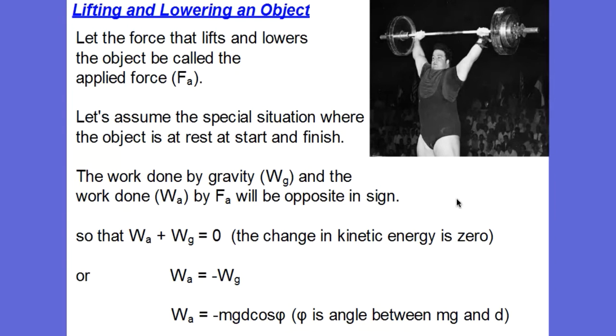So the work done by gravity, which we'll call W_G, and the work done by the applied force, W_A, will be opposite in sign. Because on the way up, the force of my hand is upward and the displacement is upward. So that's positive work done by my lifting force. But during that same time, weight is downward and displacement is upward. So the work done by gravity will be negative.